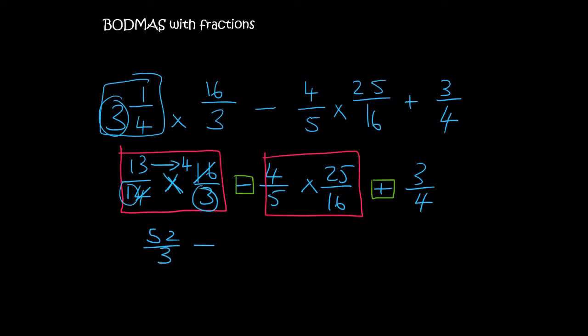Then we're going to say minus. Now with the second block over here we can cross cancel. So 4 goes into there once, 4 goes into there 4 times. 5 goes into here once and 5 goes into here 5 times. So if we multiply across we get 5 and if we multiply across we get 4.